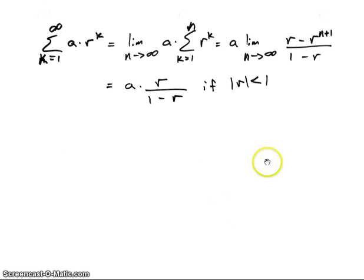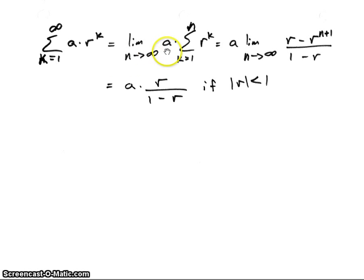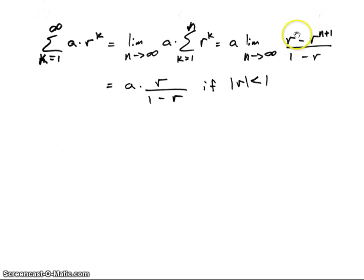Let's look at one more summation where K goes from one to infinity. We have a constant A multiplied by R to the K. We pull A out of the summation and let N go to infinity, substituting limits one and N into the finite sum formula. On the top we have R to the one minus R to the N plus one, and as N goes to infinity that second term goes to zero if the magnitude of R is less than one. So the final solution is A times R over one minus R.